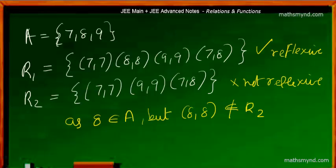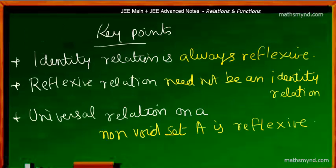The key part is that in a reflexive relation, the identity part — that is, each element pairing with itself to form an ordered pair — is essential, along with other combinations. This means it must be clear that the identity relation is naturally a reflexive relation, but the other way around need not be true. A reflexive relation need not be an identity relation, because it can also contain other ordered pairs.